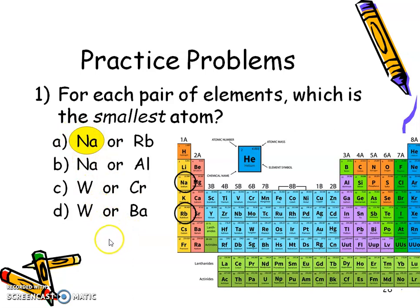I'll do one more with you. So how about sodium and aluminum? Well, sodium you already found. Aluminum is going to be in the same period. So as we go across that period, the size is going to get smaller. So aluminum should be your smaller guy. So pause and see if you can do C and D on your own.